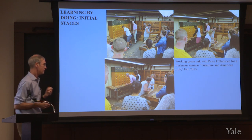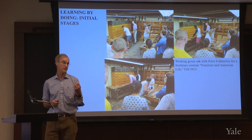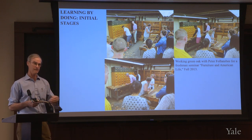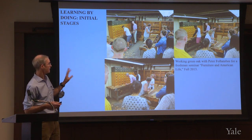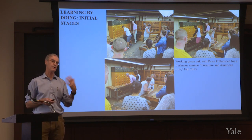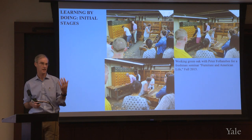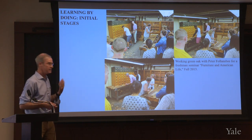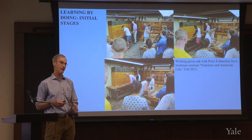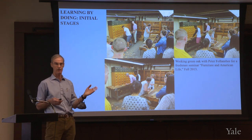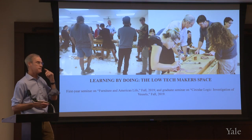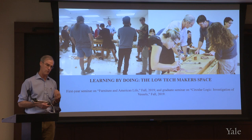I've also tried to follow the principles of John Dewey — learning by doing — putting making exercises into various courses. Initially, in the old furniture study they had a shop. I would bring in Peter Follensby, who used to be the joiner at Plymouth Plantation, an open-air museum in Massachusetts. We worked out exercises within two hours: splitting out green wood, planing it, doing some preliminary carving. Not making something in its entirety, but just getting a few principles. This I've carried forward on West Campus where Scott Strobel gave me a low-tech maker space to store tools and materials.